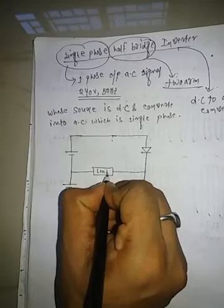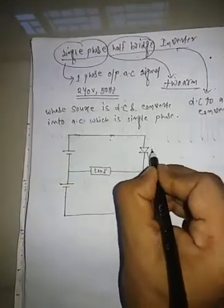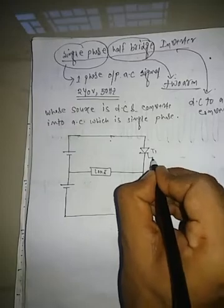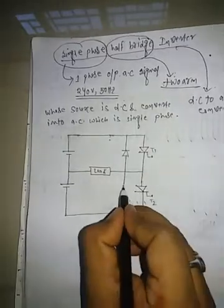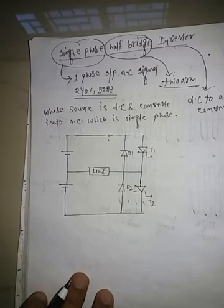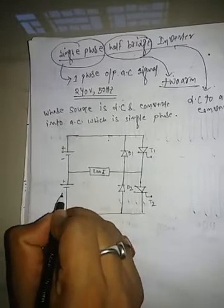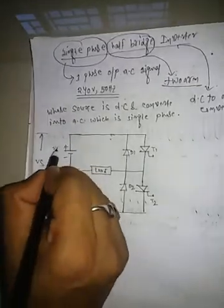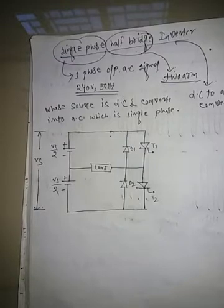The load may be resistive, inductive, capacitive, or a combination of all three. This is thyristor T1 (SCR) and this is thyristor T2. This is the gate terminal for each. A diode is connected across each thyristor — diode D1 and diode D2. This is the positive terminal and negative terminal. The total voltage source is Vs, divided into two equal parts: Vs/2 and Vs/2. This is the circuit diagram of the single phase half bridge inverter.